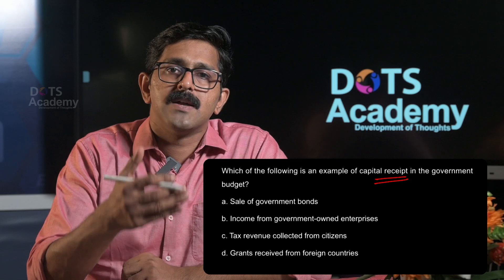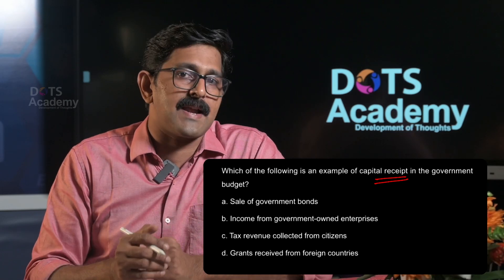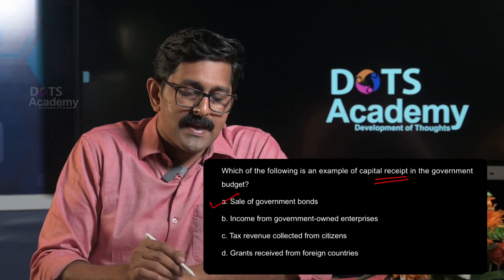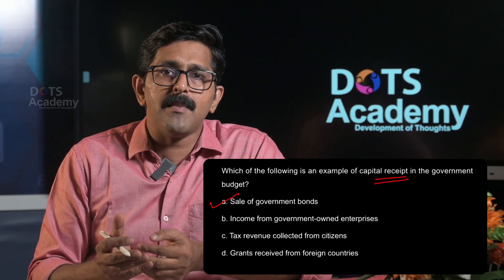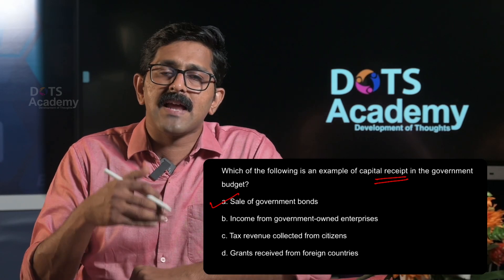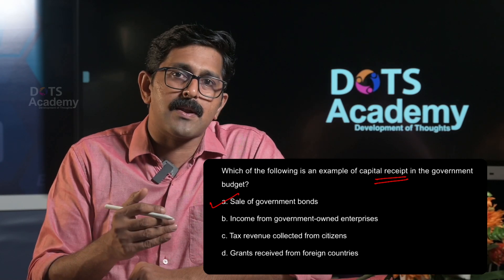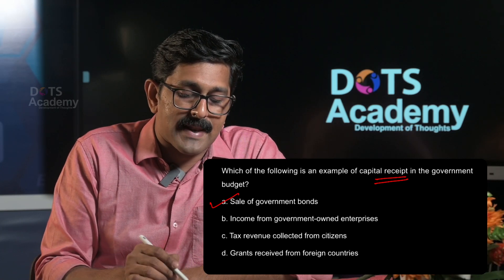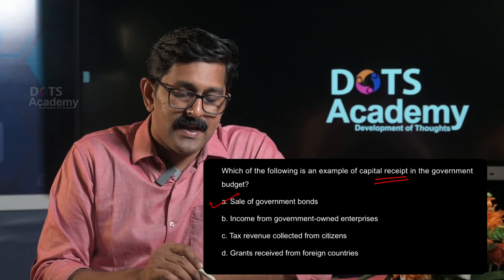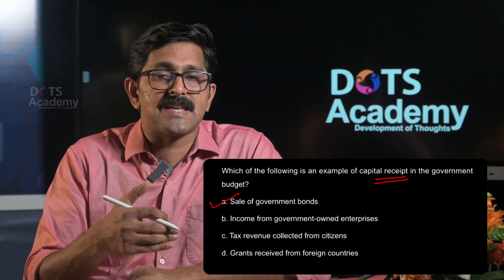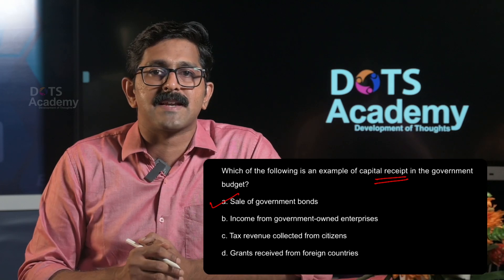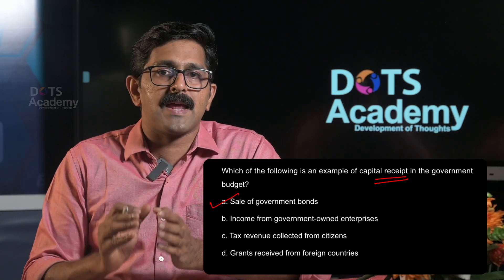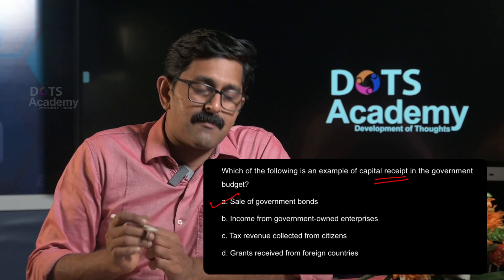Sale of government bonds is a two-way transaction — it involves long-term investment. Income from government-owned enterprises is a one-way, one-year income. Tax revenue collected from citizens is also a one-way transaction. Grants received from foreign countries is a one-way transaction as well. Therefore, option A — sale of government bonds — is the capital receipt, as it is a two-way, long-term investment transaction.